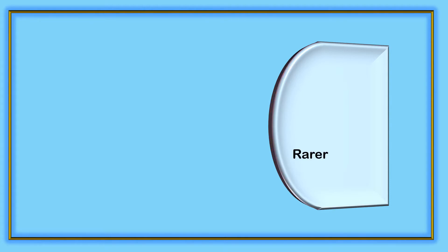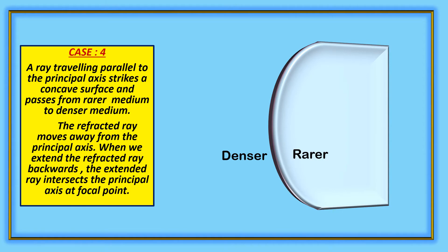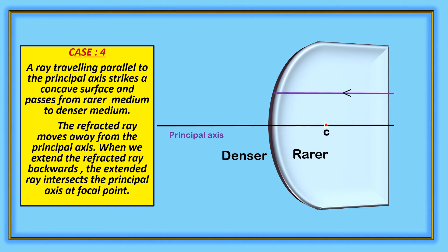Concave surface. In this case, the ray travels from rarer medium to denser medium. This is Case 4: A ray traveling parallel to the principle axis strikes a concave surface and passes from rarer medium to denser medium. The refracted ray moves away from the principle axis. When we extend the refracted ray backwards, the extended ray intersects the principle axis at the focal point.